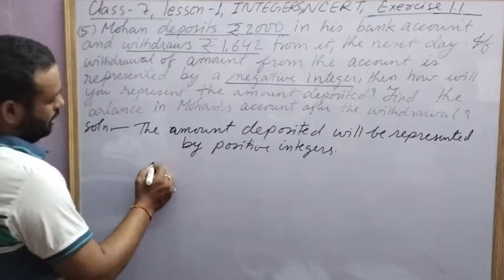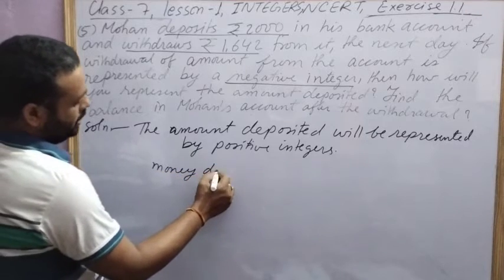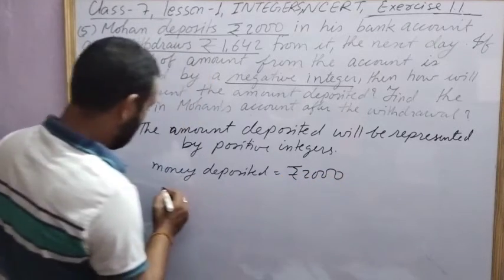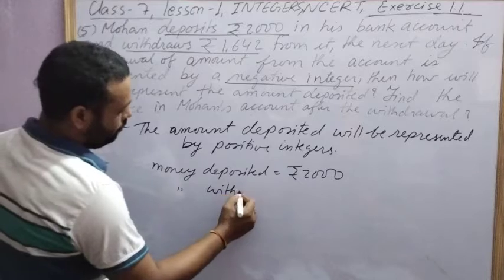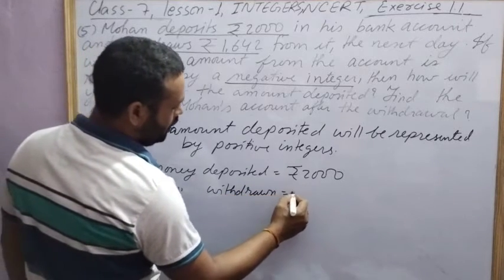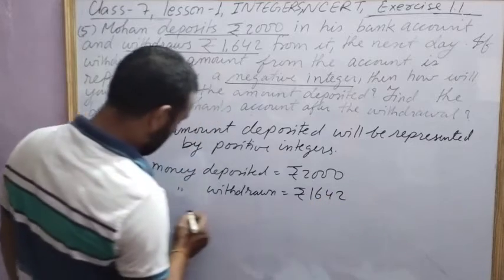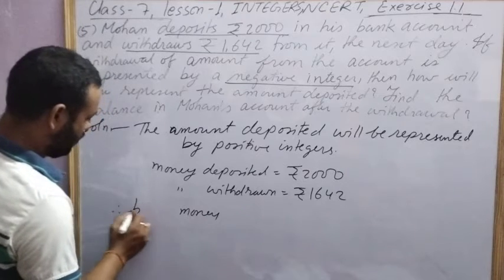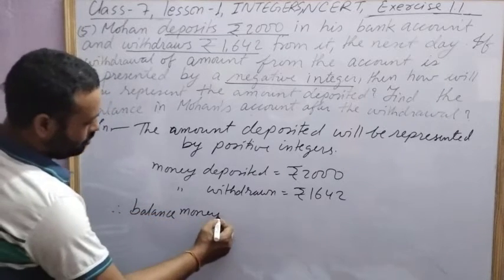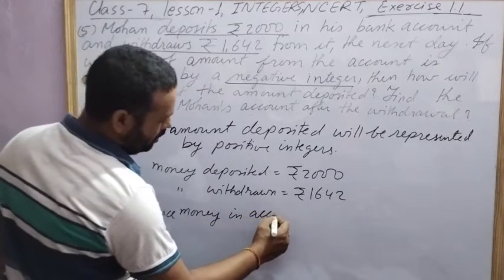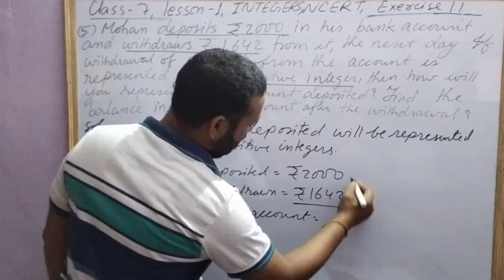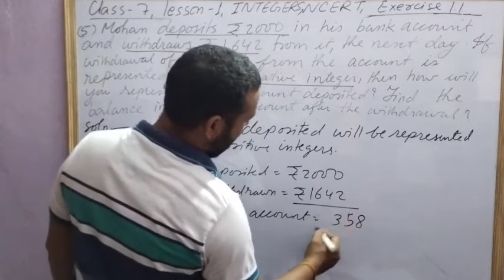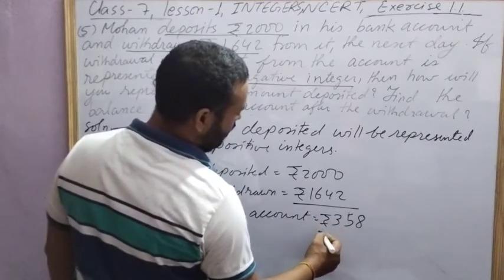Therefore, money deposited equals rupees 2000. Money withdrawn is rupees 1642. Therefore, balance money in account equals 2000 minus 1642, which equals rupees 358.